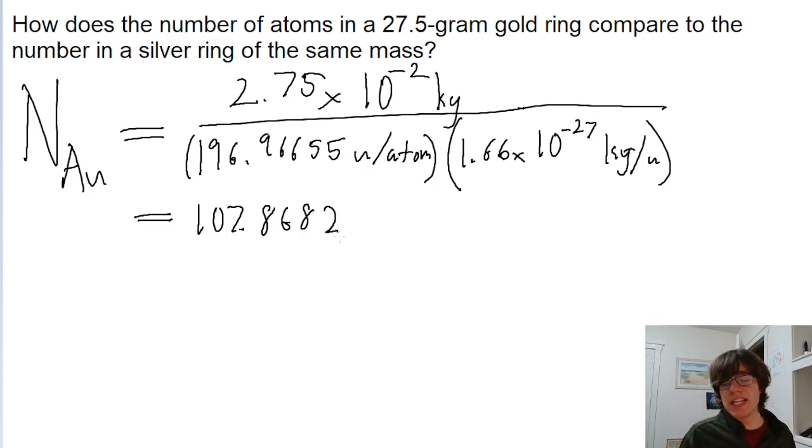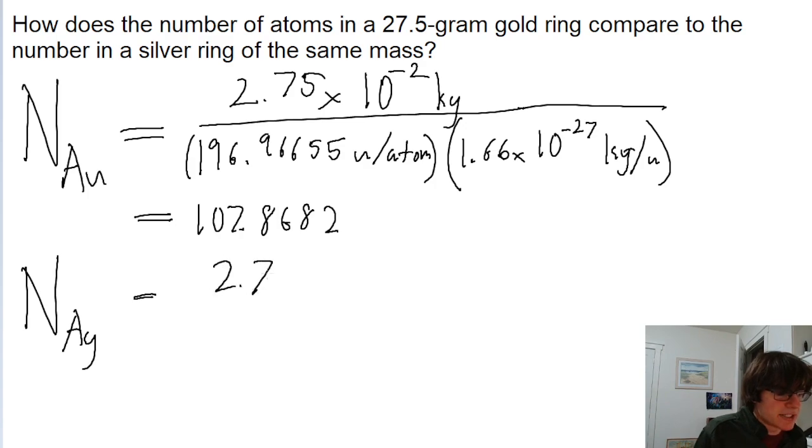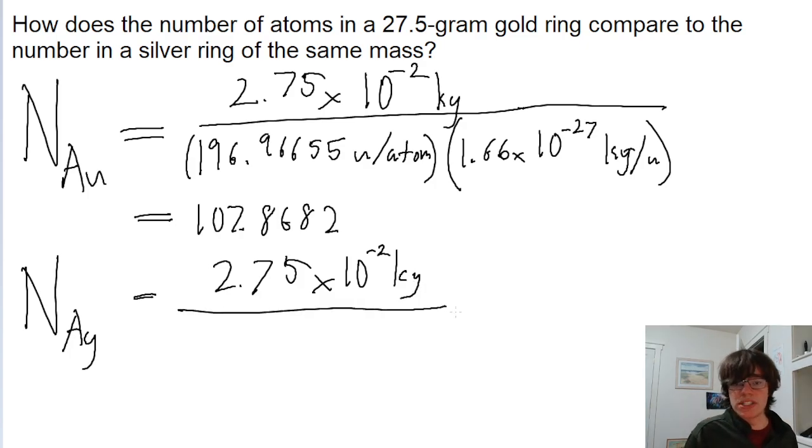Now let's do the same thing for silver. The number of atoms in silver, and on the periodic table, the symbol for silver is AG. Kind of weird that neither of them are anything like the names of the substance. But same mass, 2.75 times 10 to the power of negative 2 kilograms, and then we divide by the mass of one silver atom.